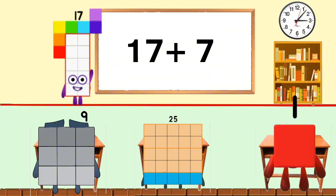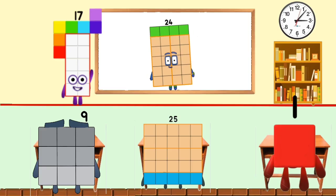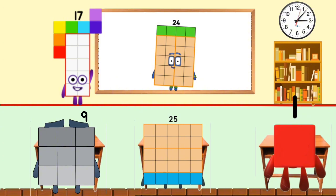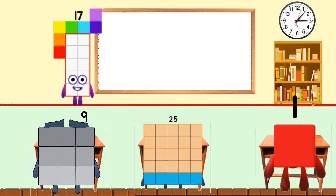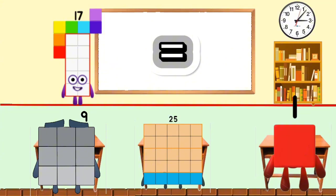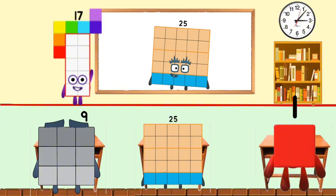17 plus 7 equals 24. 17 plus 8 equals 25.